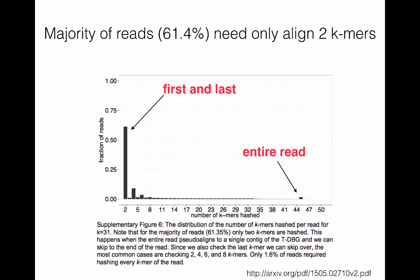Doing this speeds up the alignment process dramatically because for the vast majority of reads, you only need to actually align the first and last k-mers. This graph shows the fraction of reads on the y-axis and on the x-axis the number of k-mers that have to be hashed to align that read. You can see that the vast majority — over 60% — have only two k-mers hashed, whereas only 1.6% of reads require the hashing of every k-mer. This represents a dramatic speed-up and is part of the reason why Kallisto is so fast.